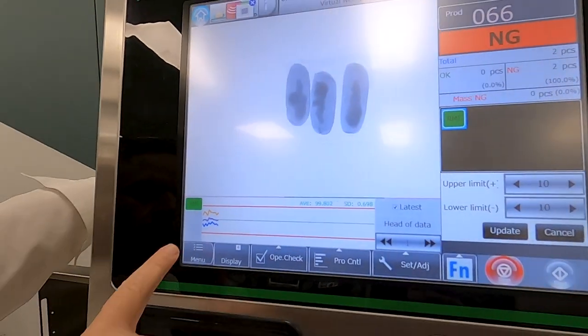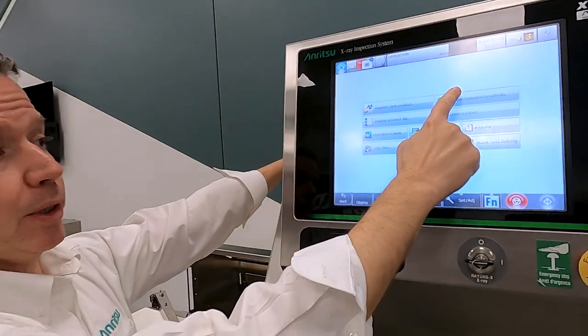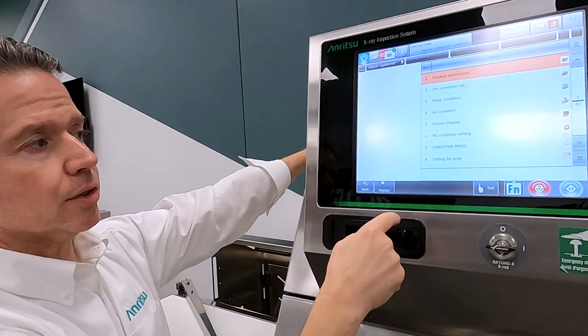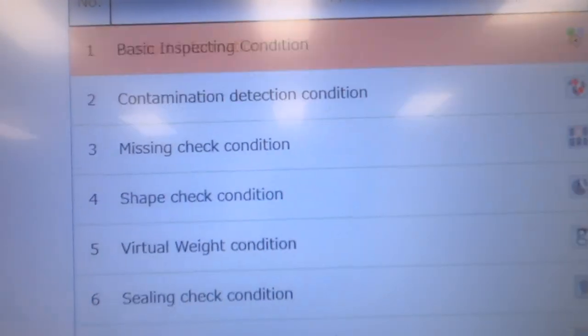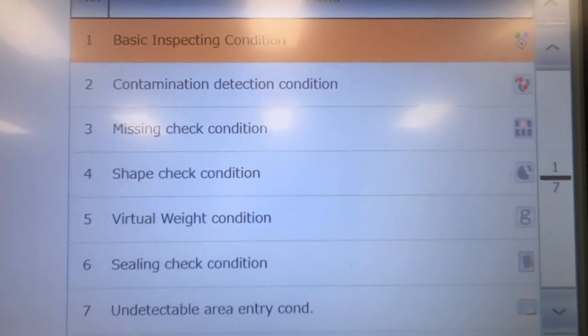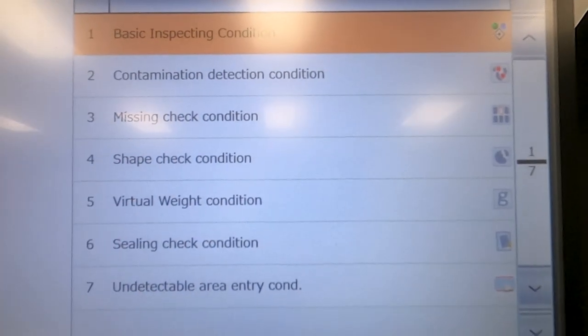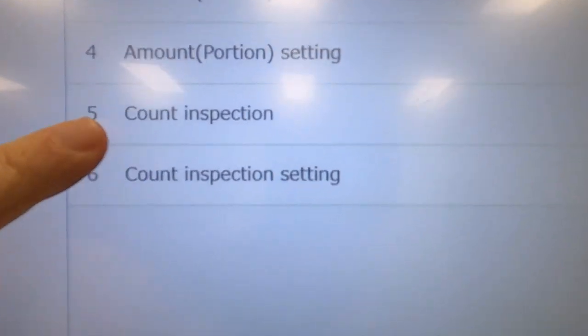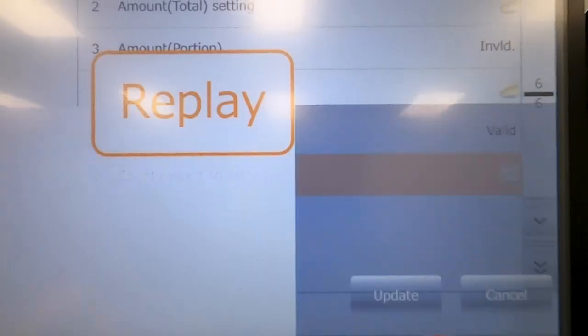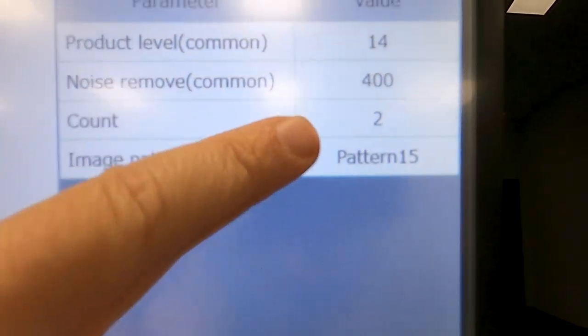Now to dig down a little bit further, we'll go into the software just a little bit here and show you how this actually works. So if I go into the inspection capabilities of the machine, you can see we have different categories. Contaminant detection is obviously on and running. Missing, right here, that's where we're doing the count.